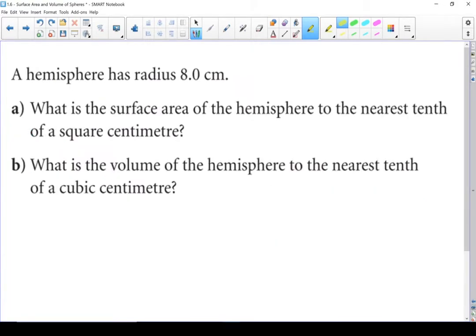Let's look at a hemisphere with a radius of 8 centimeters. This is a bit of a two-for-one question because the first part asks us to find the surface area and the second part asks us to find the volume. We're going to do it like two separate questions. Let's start with the surface area.